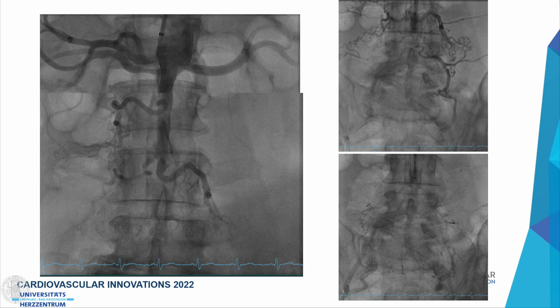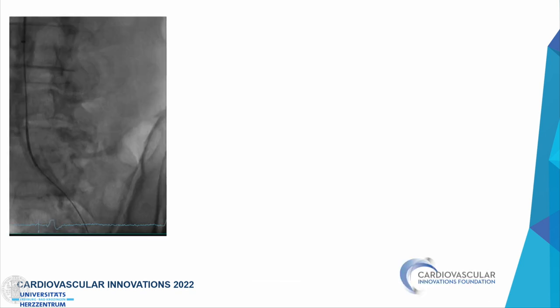This is the reconstitution of the iliac bifurcations shown on unsubstracted angiography, providing bony landmarks. When approaching from the upper extremity, the first step is to probe whether the aorta is occluded. The aortic occlusion is usually a very soft occlusion and you are able to cross in the true lumen.